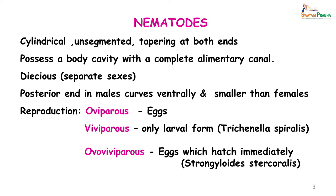In the nematodes let us look at their general characteristics. Morphologically these are cylindrical unsegmented worms which taper at both ends. They possess a body cavity with a complete alimentary canal. They are dioecious, that is they have separate sexes. The posterior end of the male curves ventrally and the males are smaller than the females. Reproduction can be oviparous, viviparous, or ovo-viviparous as seen with Strongyloides stercoralis.